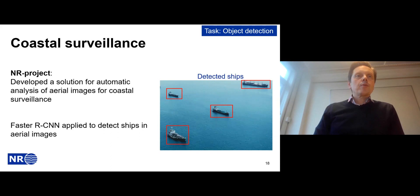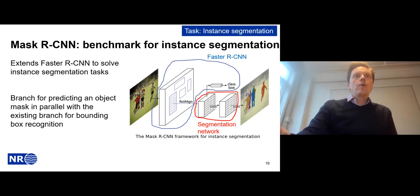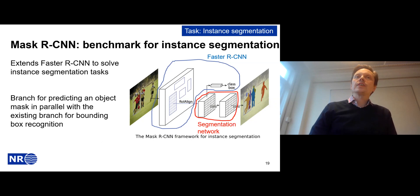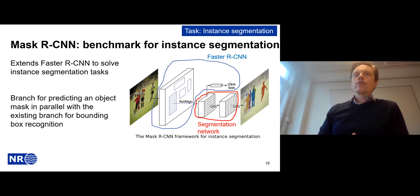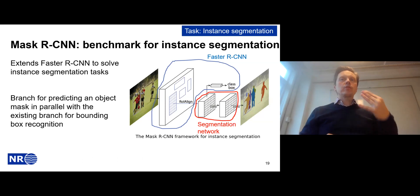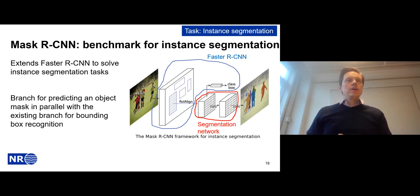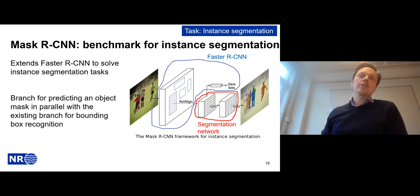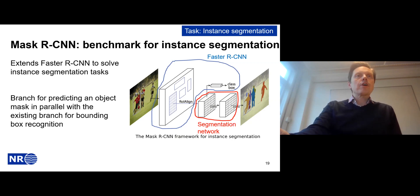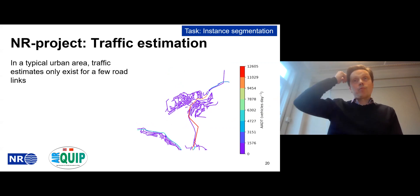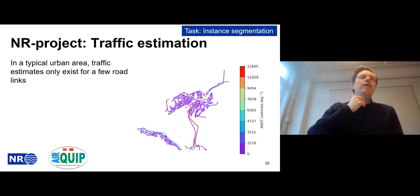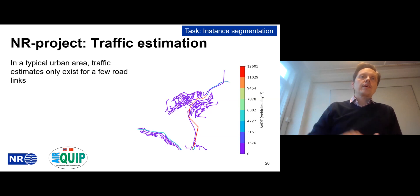For instance segmentation, the commonly used model is Mask R-CNN, an extension of Faster R-CNN that also solves instance segmentation. It uses the Faster R-CNN framework but adds a segmentation mapping network running in parallel — so not only can it create bounding boxes, but it can also delineate objects in the image. We have applied this for traffic estimation from aerial images.